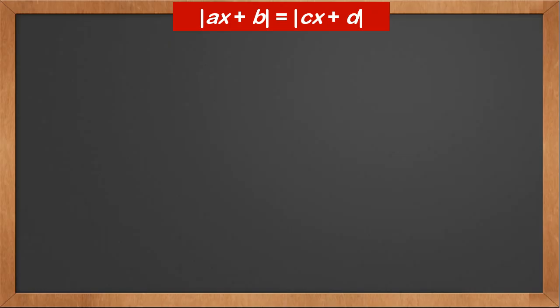There are two types of equations we need to be able to solve. The first type is the modulus of ax plus b equals the modulus of cx plus d. We know that two moduli are equal is equivalent to two squares being equal. Therefore, in order to solve this type of equation, we square both sides.